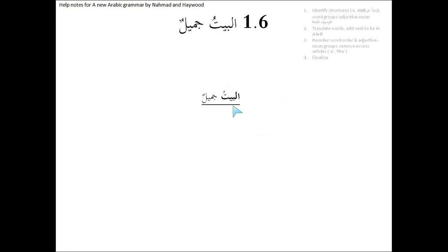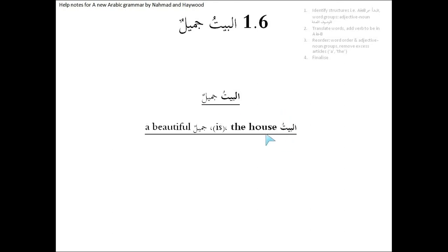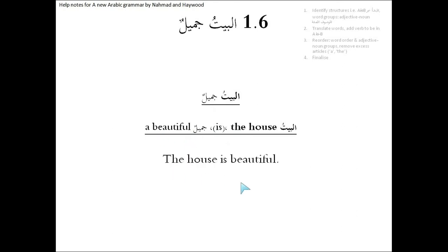أَلْبَيْتُ جَمِيلٌ — exactly the same as the previous one. This is الجُمْلَة الْإِسْمِيَّة. أَلْبَيْتُ is the مُبْتَدَ, the subject; جَمِيلٌ is the خَبْر. It is definite shifting to indefinite — at that shift point we put the 'is,' which is our clue, along with the meaning. أَلْبَيْتُ means 'The house,' so: 'The house is beautiful.' وَآخَرُ دَعُونَا الْحَمْدُ لِلَّهِ رَبِّ الْعَالَمِينَ.